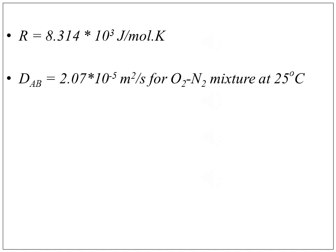From the available data, the value of DAB for the oxygen-nitrogen gas mixture at 25°C is 2.07×10^-5 m²/s.